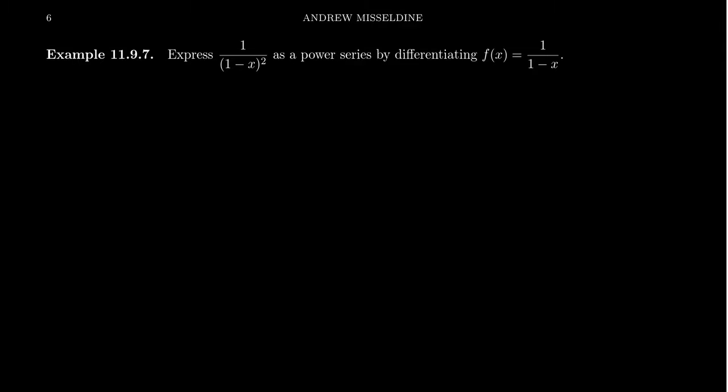In this video, we're going to find a power series representation for the algebraic expression 1 over 1 minus x squared. In this situation, we have a repeated factor in the denominator. There's a linear factor, 1 minus x, but it shows up twice.